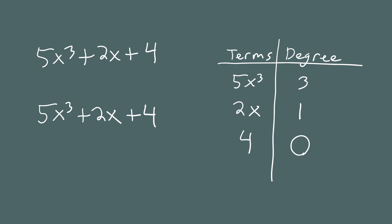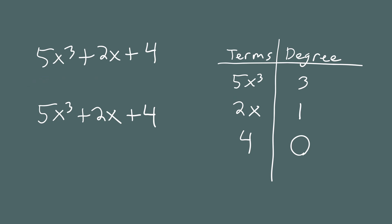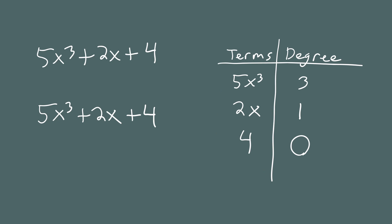There's one little thing that can trip people up: there's no plus sign in front of 5x cubed, but there is in front of 2x and 4. That's because when the first term of a polynomial is positive, we just leave the plus sign out. If the first term is negative, you would write it; if it's positive, you can leave it off. To recap: write the terms from largest degree to smallest degree.